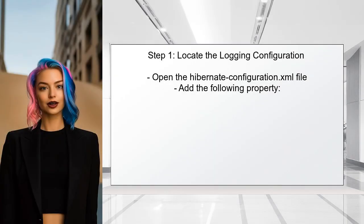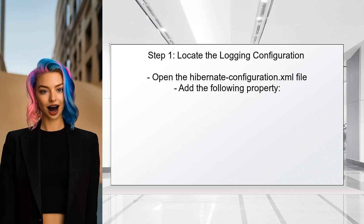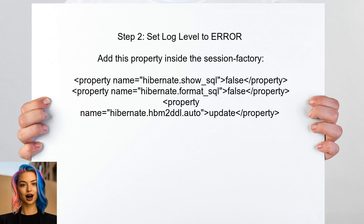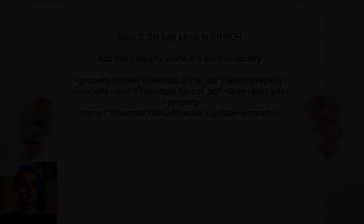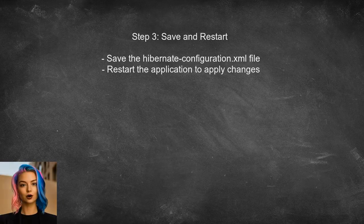To disable the show warning statements in Hibernate, first locate the logging configuration. Since the user is using the default settings, they will need to add a specific property to the Hibernate configuration file. Next, add the property to set the log level to error — this will prevent the show warning statements from being logged. After adding the properties, save the configuration file and restart the application to apply the new logging settings.